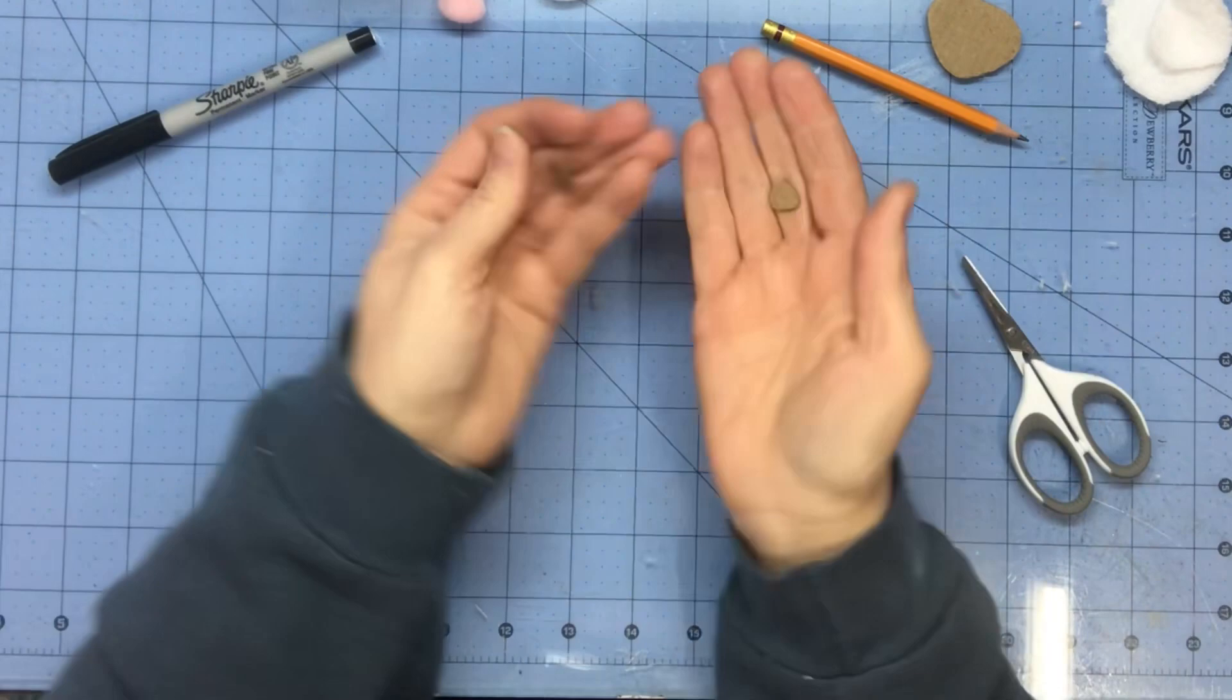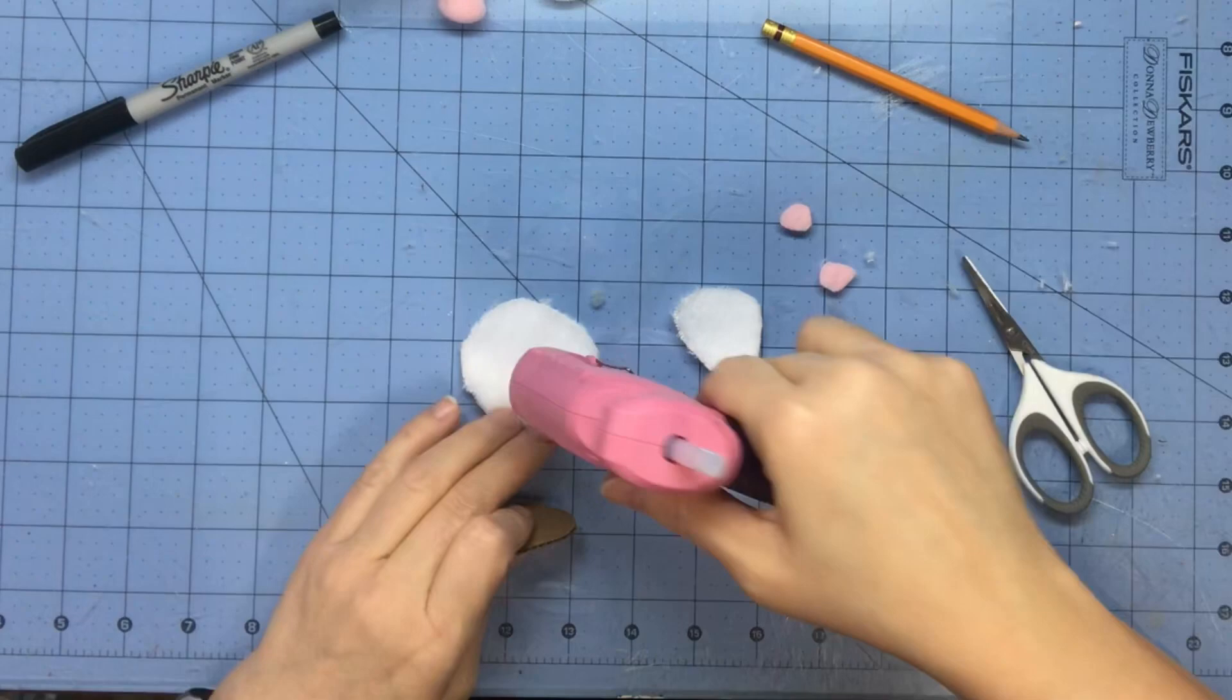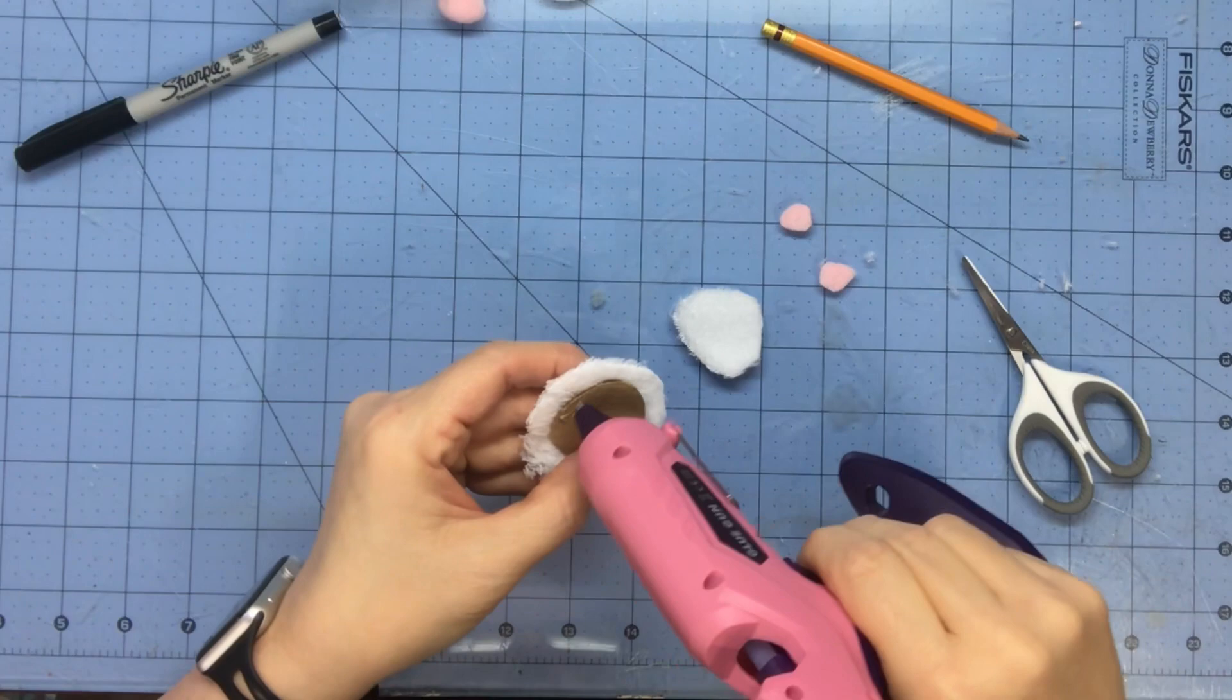Now you want the fluffy side, and you're going to glue your cardboard down. Then take glue and go around, carefully rolling the edge in and pushing it down.